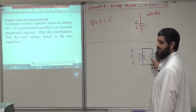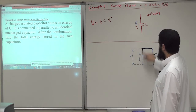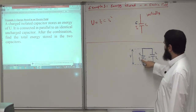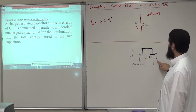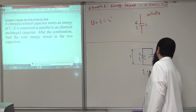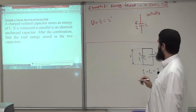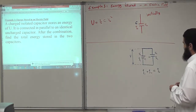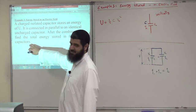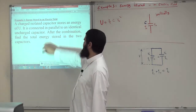The uncharged capacitor is connected in parallel with the first. The charge Q0 will be distributed so that the first capacitor carries Q1 and the second carries Q2. From conservation of charge, Q1 plus Q2 equals Q0. We want to find the total energy stored in the two capacitors after the combination.